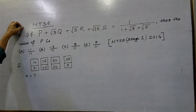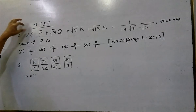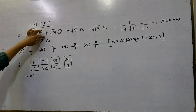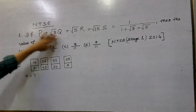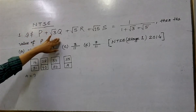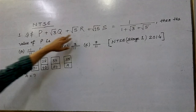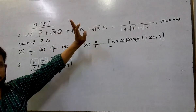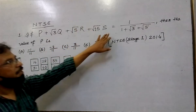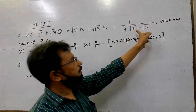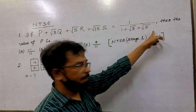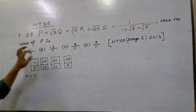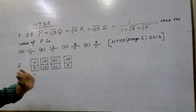The identity problem here: P plus √3 cube plus √5r plus √50s equals 1 upon 1 plus root 3 plus root 5. Then the value of P is — have it?